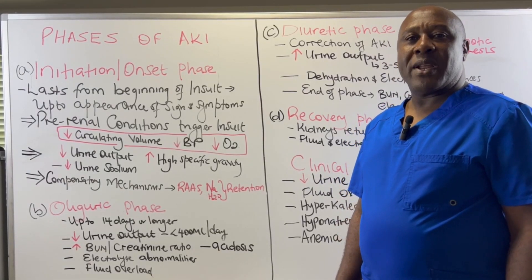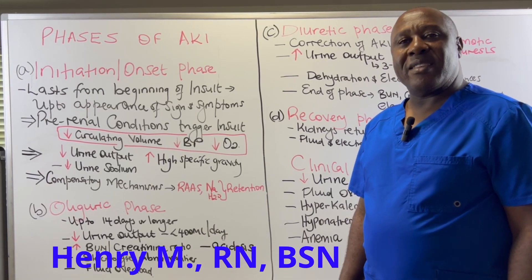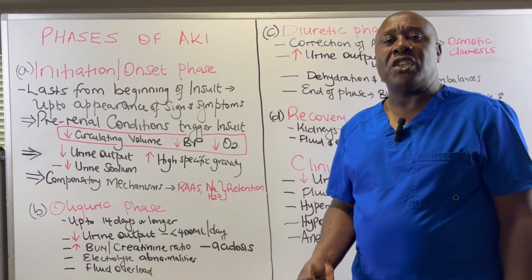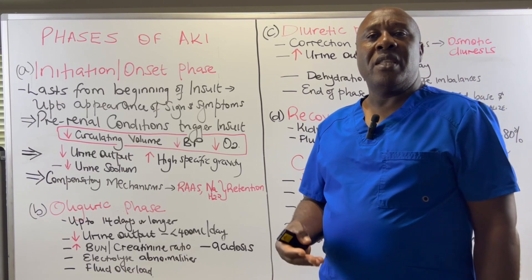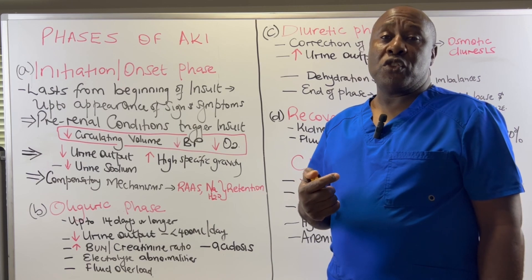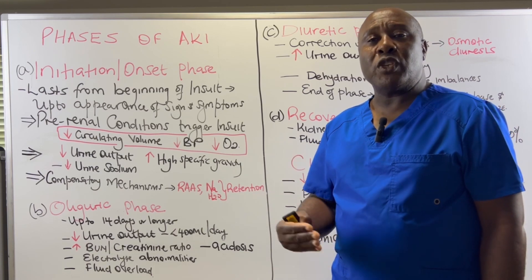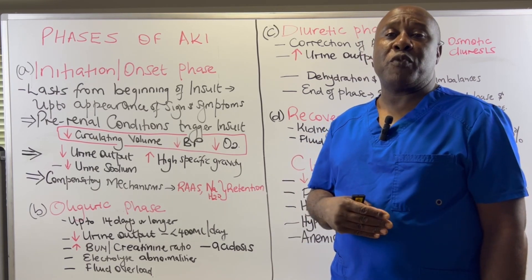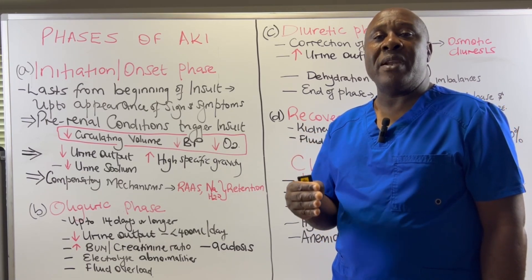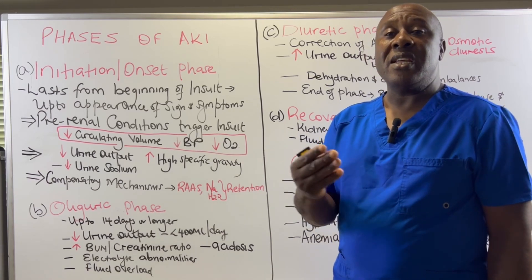Hello everyone, a very warm welcome to the SMART RN channel. My name is Henry. Today we are going to look at the phases of acute kidney injury. In our previous video, we looked at acute kidney injury and considered the definition, risk factors, and causes. Remember, we also said that acute kidney injury is reversible — we can restore our kidneys back to normal filtration function if we address the causes of AKI in a timely manner. Otherwise, acute kidney injury could progress to chronic kidney failure.